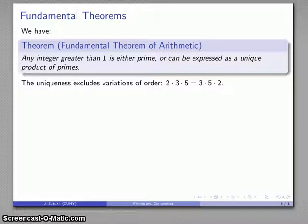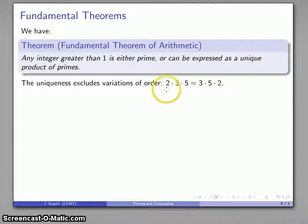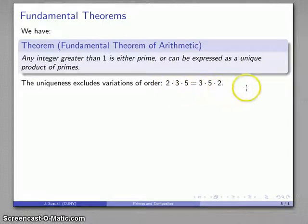The reason that we want to exclude 1 from consideration is that because multiplication by 1 doesn't change the value, then this product here, 2 times 3 times 5, is the same as 3 times 5 times 2 times 1 times 1 times 1.